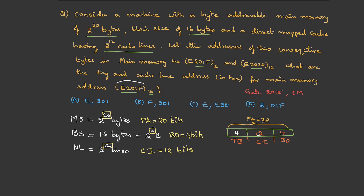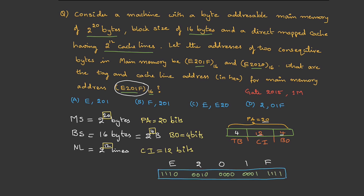For the specific address e201f, converting to binary: E = 1110, 2 = 0010, 0 = 0000, 1 = 0001, F = 1111. This gives 20 bits total (5 hex digits × 4 bits). From the diagram: the last 4 bits (F = 1111) are block offset, the next 12 bits (201 = 0010 0000 0001) are cache index, and the remaining 4 bits (E = 1110) are tag bits. Therefore, tag = E and cache index = 201, so the answer is option A: E and 201.